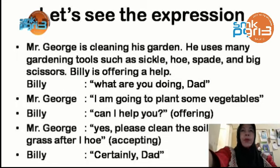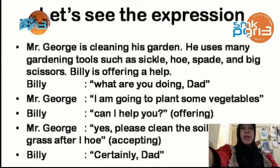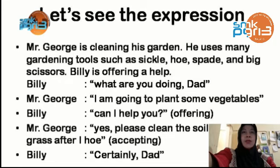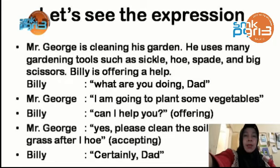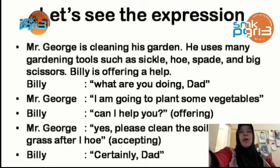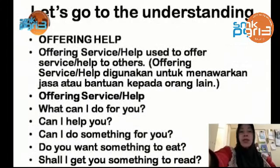Let's see the dialogue first. Mr. George is cleaning his garden. He uses many gardening tools such as a sickle, hoe, spade, and big scissors. Billy is offering help. 'What are you doing, Dad?' 'I'm going to plant some vegetables.' 'Can I help you?' 'Yes please, clean the soil from the grass after I hoe.' From that dialogue, we find two expressions: offering help and accepting.